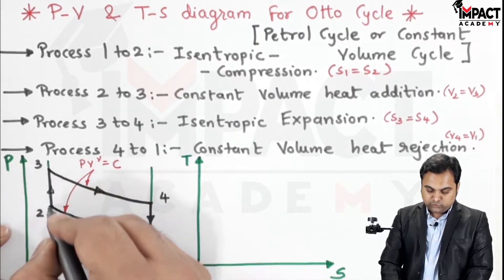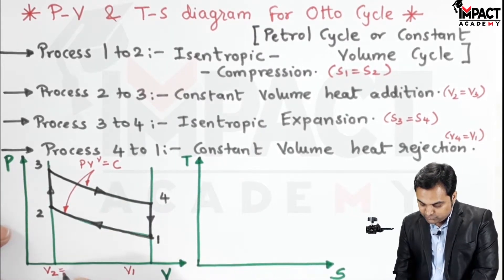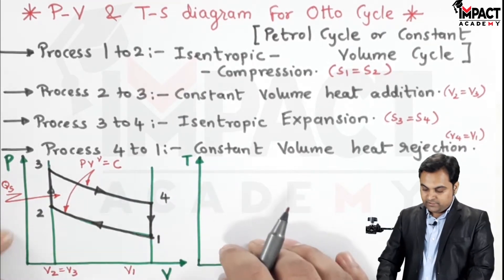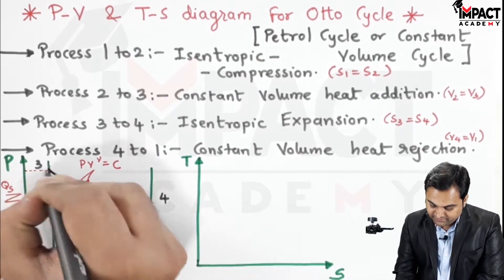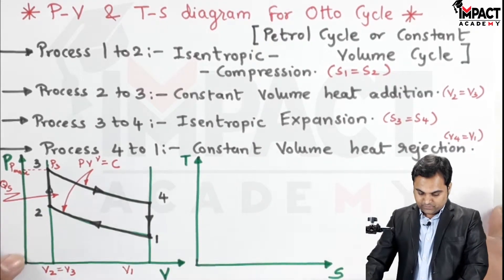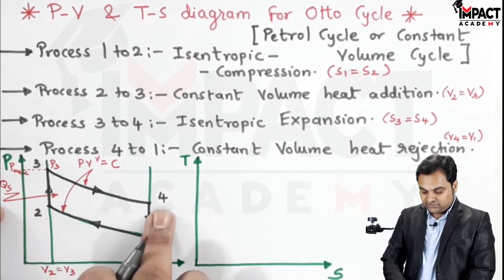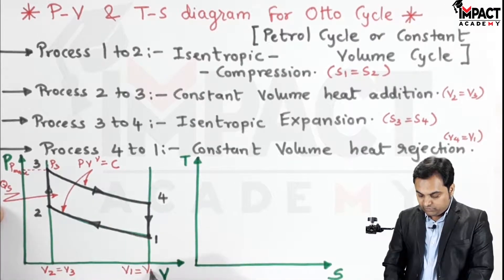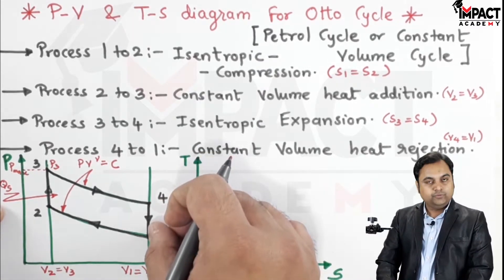Process 2 to 3 is constant volume heat addition where V2 equals V3 and heat is supplied. At point 3 we get the maximum pressure, P_max equal to P3. Then 3 to 4 is isentropic expansion where pressure decreases and volume increases from V3 to V4. Since V4 equals V1, the process 4 to 1 is constant volume heat rejection.